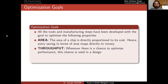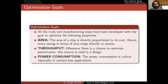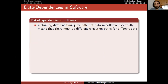The second thing to optimize is throughput. This is more important in terms of cryptography — whenever there is a chance to optimize performance, this chance is used in a design. The third thing is power consumption, which is critical especially in contactless applications because these devices don't have a battery; they take their energy from an electromagnetic field. So it is always good to have a device that requires less power to work.